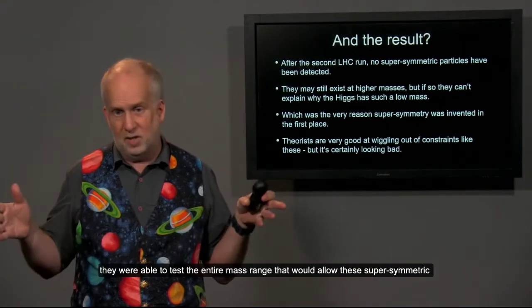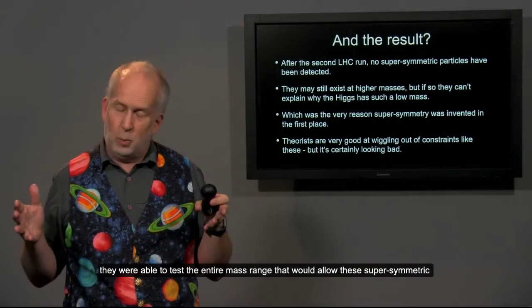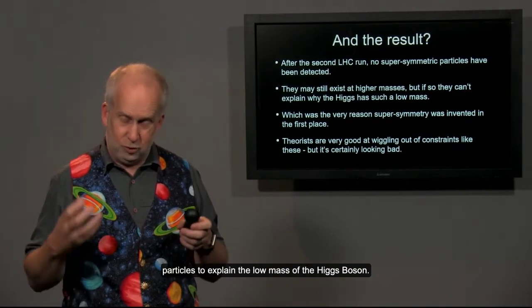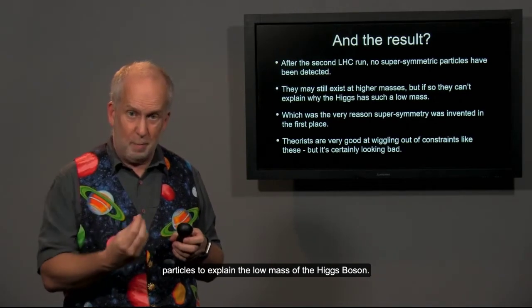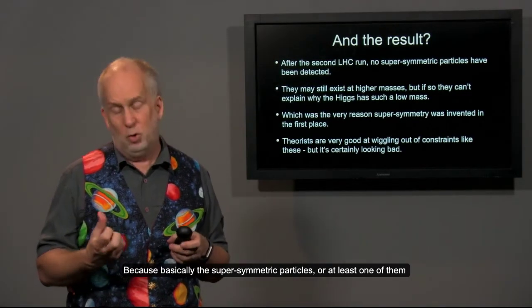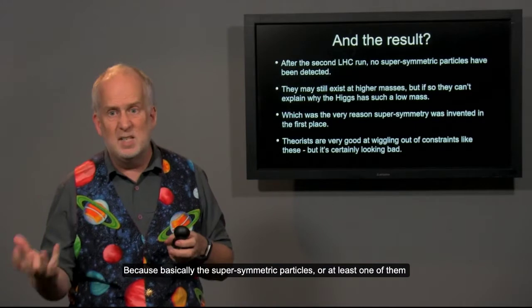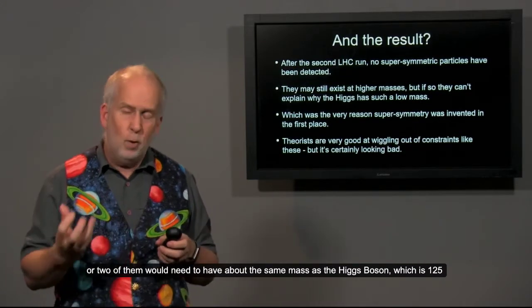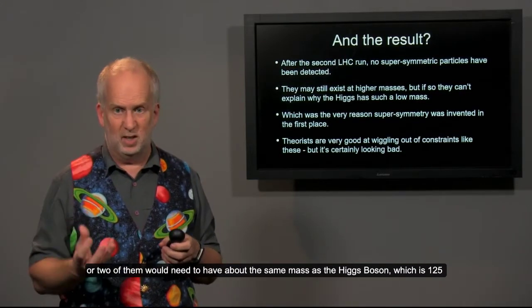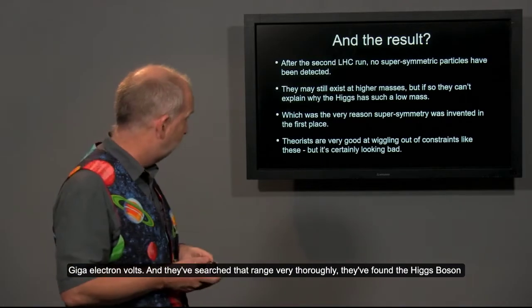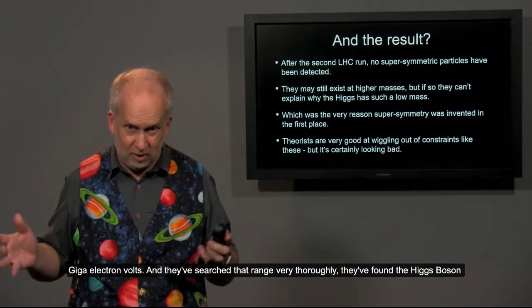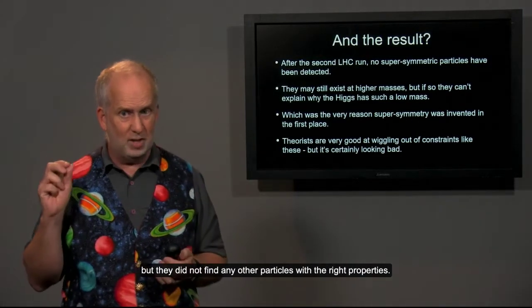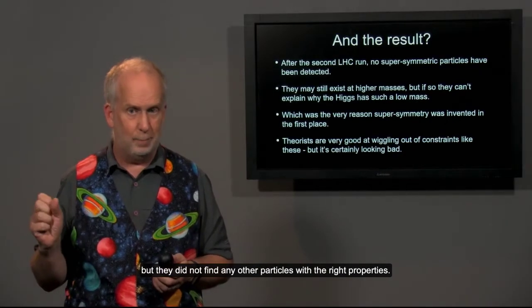And they were able to test the entire mass range that would allow these supersymmetric particles to explain the low mass of the Higgs boson. Because basically the supersymmetric particles would need to have, at least one of them or two of them, would need to have about the same mass as the Higgs boson, which is 125 giga electron volts. And they searched that range very thoroughly, they found the Higgs boson, but they did not find any other particles with the right properties.